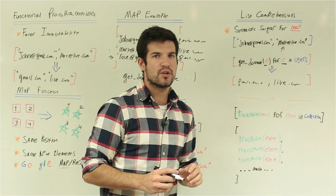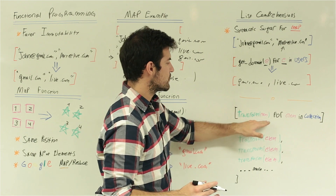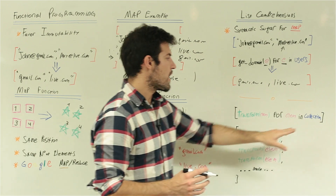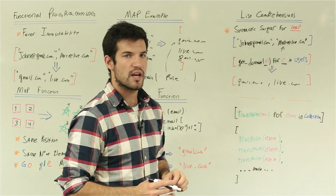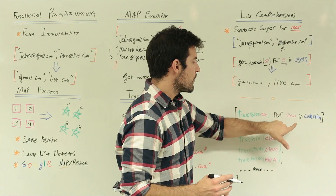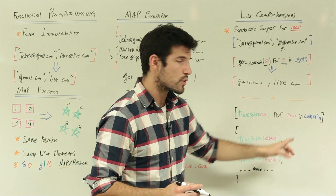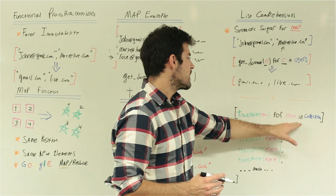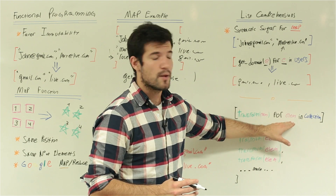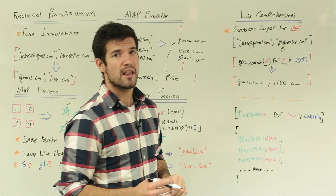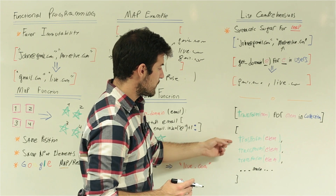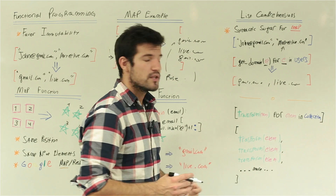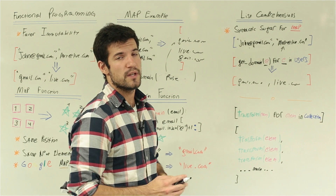The way to define a list comprehension is simple. We have a transformation applied to each one of the elements, we have the original collection that we're referencing, and 'for' and 'in' are our keywords. We define a simple variable — we can choose whatever name we want — for each one of these elements. The final result will be the resulting list with the transformation applied to each one of these elements.